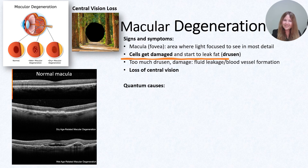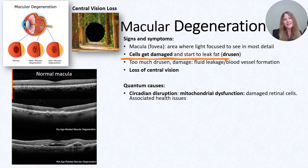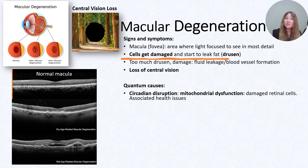What are the quantum causes? Circadian disruption will lead to mitochondrial dysfunction, and those retinal cells are packed with mitochondria, so anything that will disrupt mitochondria will damage and disrupt the macula, which contributes to vision loss. Mitochondrial dysfunction will cause a lot of oxidative stress, and this is what damages the cells in an area that requires a lot of blood flow and oxygen.